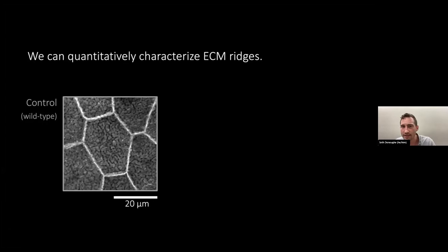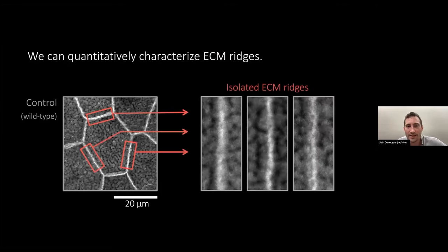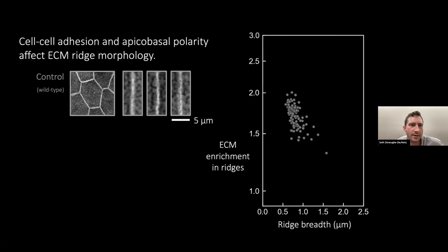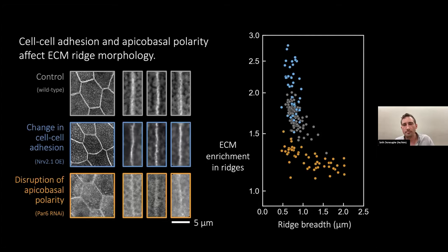We can quantitatively characterize the ECM. Specifically, I'll show you about these ridges. I wrote some software tools that can extract and summarize the data from lots of these ECM ridges. With these ridges, you can ask things like: how concentrated is protein at the ridges? What's the width of these ridges? What's the continuity of the ridges? With such tools, we can learn that adhesion and apical-basal polarity both affect ECM ridge morphology. What I'm showing here is a control tissue and some samples of different tissues of the same genotype. On the y-axis is the enrichment of this ECM protein in the ridges. On the x-axis is the breadth of the ridges. Now I'm going to show you two other genotypes from the screen that both move the tissue into a different part of this two-dimensional morphospace. You can change cell-cell adhesions, or you can change apical-basal polarity, and you end up with ridges that have different traits.